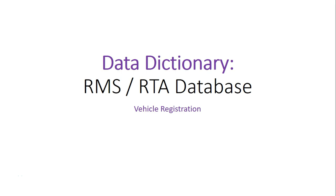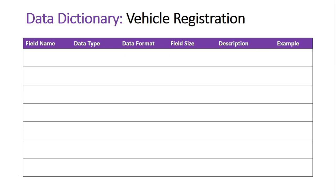We're going to take a look at a data dictionary for vehicle registration. However, this presentation should not strictly be in the form of a data dictionary, because this is clearly an entity within a relational database — specifically a junction entity, which is the connecting entity between other entities within a relational database. Relational databases are usually represented as schemas in the form of entity relationship diagrams, though this video will still be helpful.